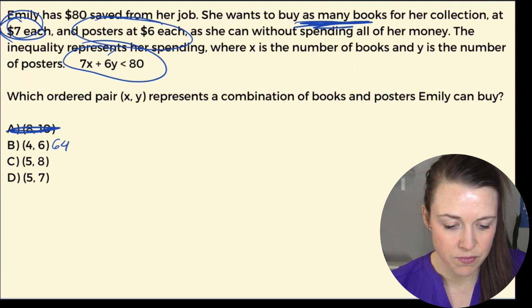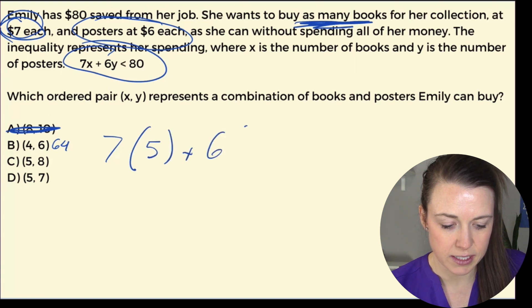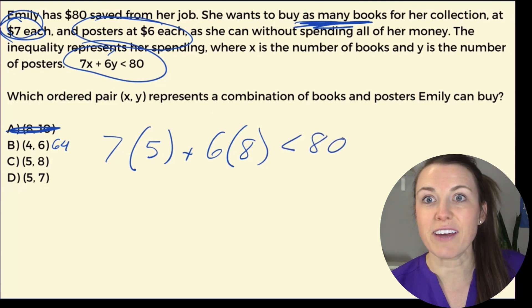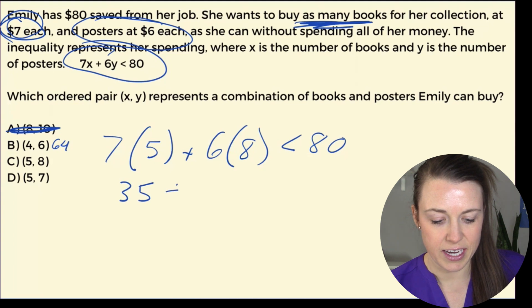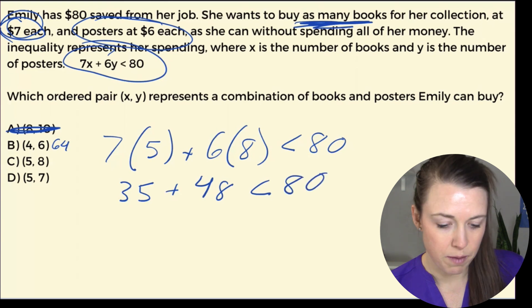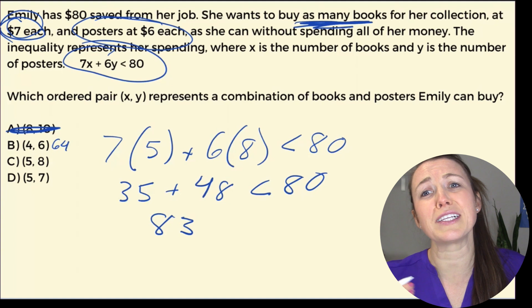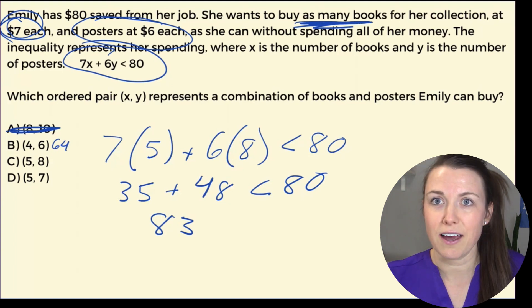Letter C. I have 7 times 5 plus 6 times 8 is less than 80. So 7 times 5 is 35, and 6 times 8 is 48. Add those up and we get, oh, so close, 83. But she's a little bit over. So that's not going to work.